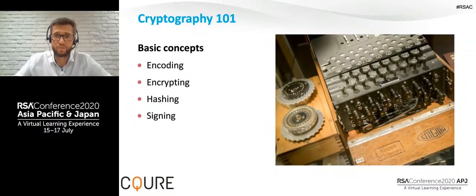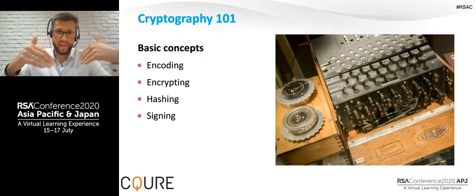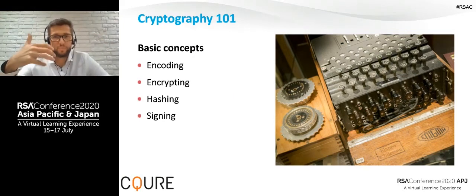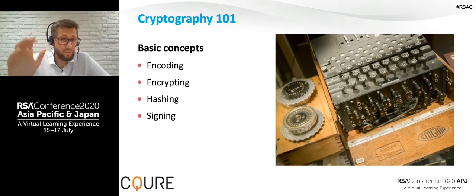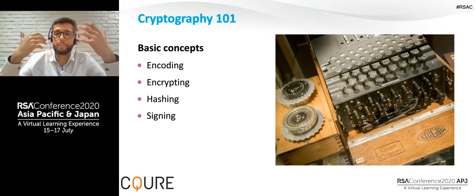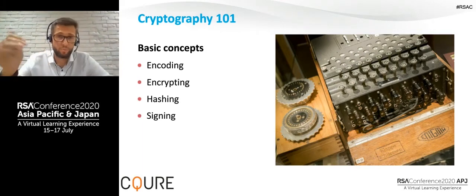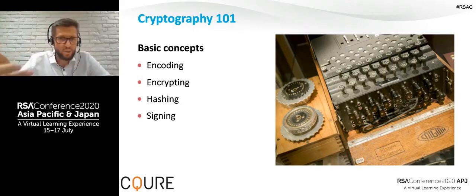Let's start with a little bit of cryptography — just enough to fully understand what we're talking about. The basic concept: encoding. The purpose of encoding is to transform data so that it can be properly consumed by different types of systems. The goal is not to keep information secret but rather to ensure it can be consumed properly. Examples include URL encoding, Unicode, and Base64.